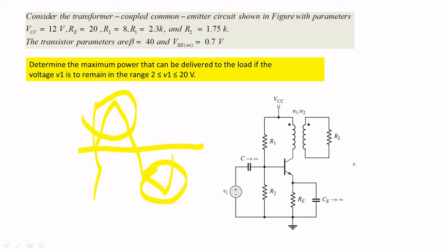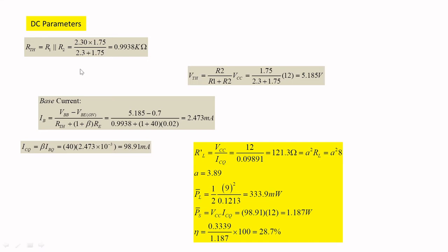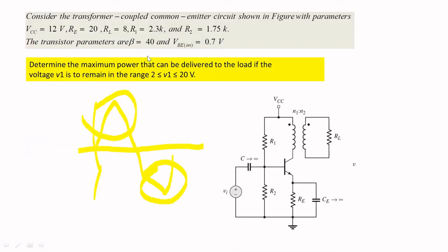As usual, first we want to find the parameters of the quiescent point. That is IBQ, ICQ, Rth and Vth. Then only we proceed to find the efficiency. So, first we will find Rth. The formula for Rth is R1 parallel to R2. That is 2.30 times 1.75 divided by 2.3 plus 1.75. It is calculated to be 0.998 kiloohms.